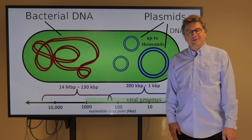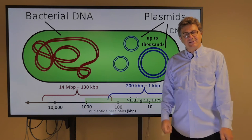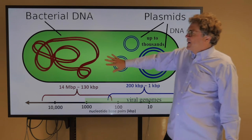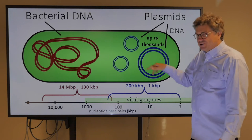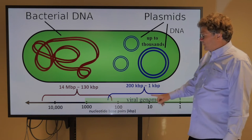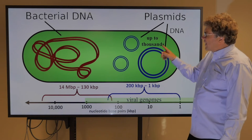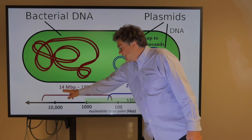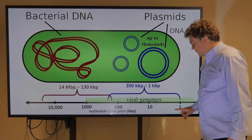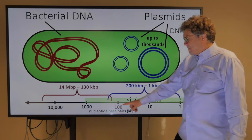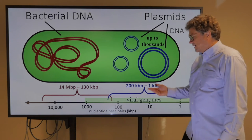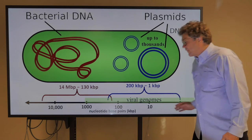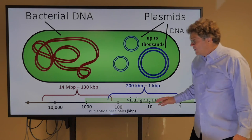Let's talk about the DNA of bacteria, the plasmids inside of them, and viruses, and compare them. This green thing is a bacterium, and here's the bacterial DNA. Plasmids are circular DNA, and there could be up to a thousand such plasmids inside of a single bacterial cell. The bacterial DNA is on the scale of 14 megabase pairs to 130. Notice this is a kilobase pair scale. This is where the plasmids are on this size scale, and in green here are viral genomes — they overlap with the plasmids.